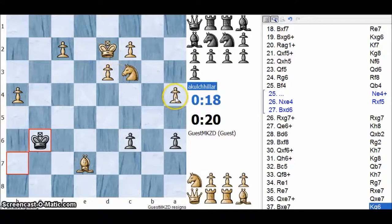e4 c5 Sicilian, f4 Grand Prix attack, knight f3 d6, bishop b5 pinning the knight on the c6 square, bishop d7 and this is a multipurpose move because as I have already told you...